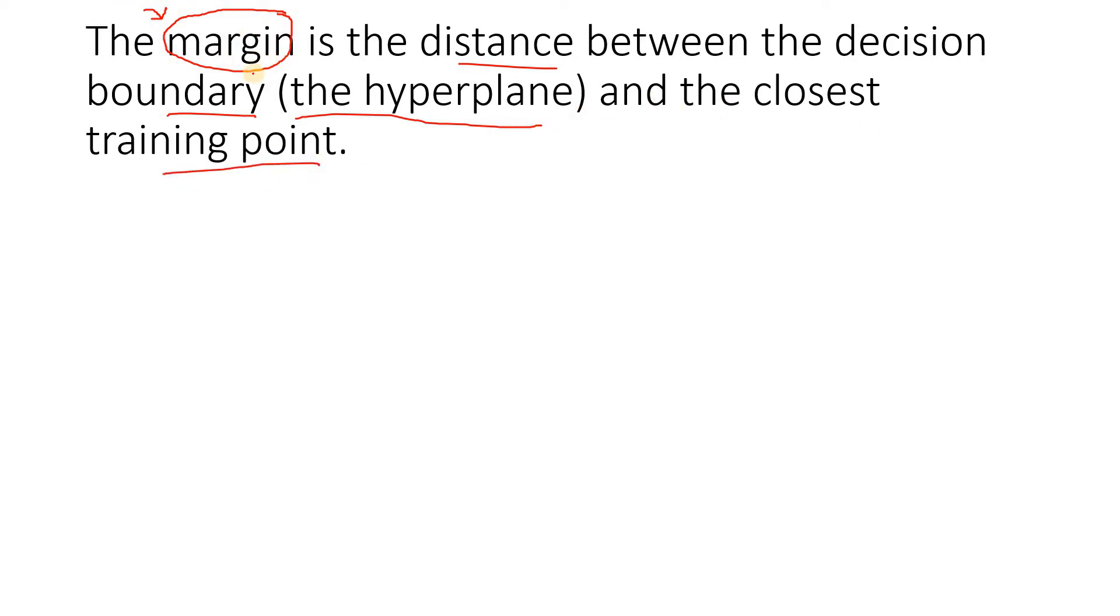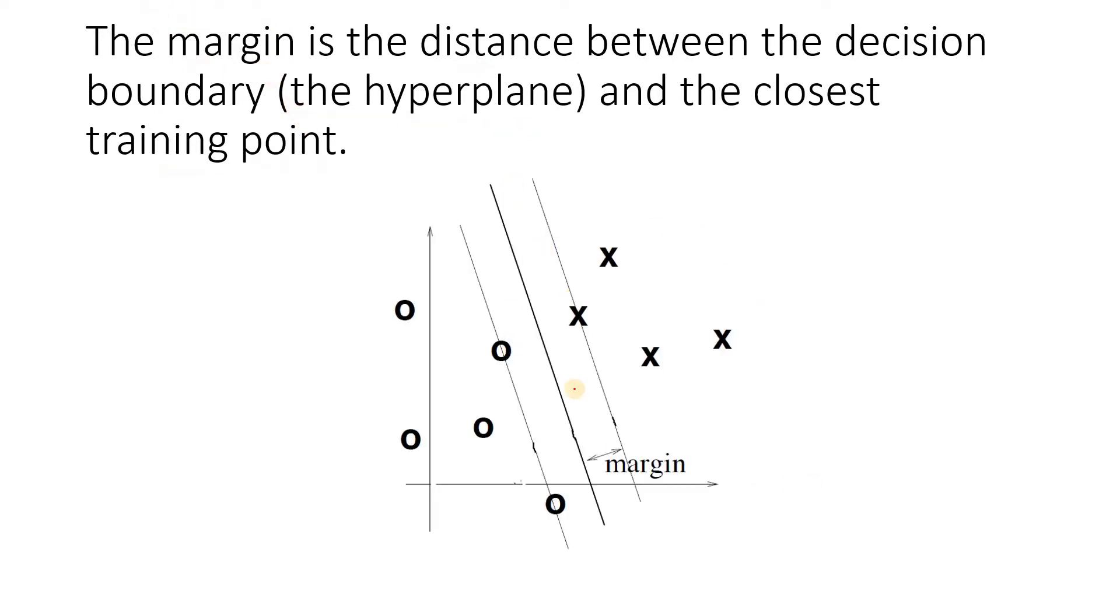The margin is basically the distance between the decision boundary, or we also call this hyperplane in fancy terms, and the closest training point. Now the question comes: how to calculate this margin? If you just take this particular diagram, the concept of margin will be very clear to you.